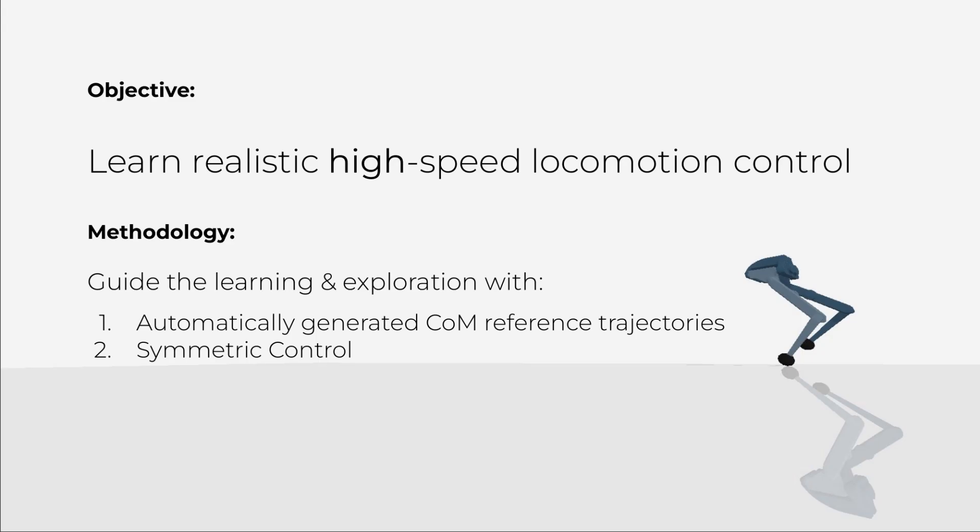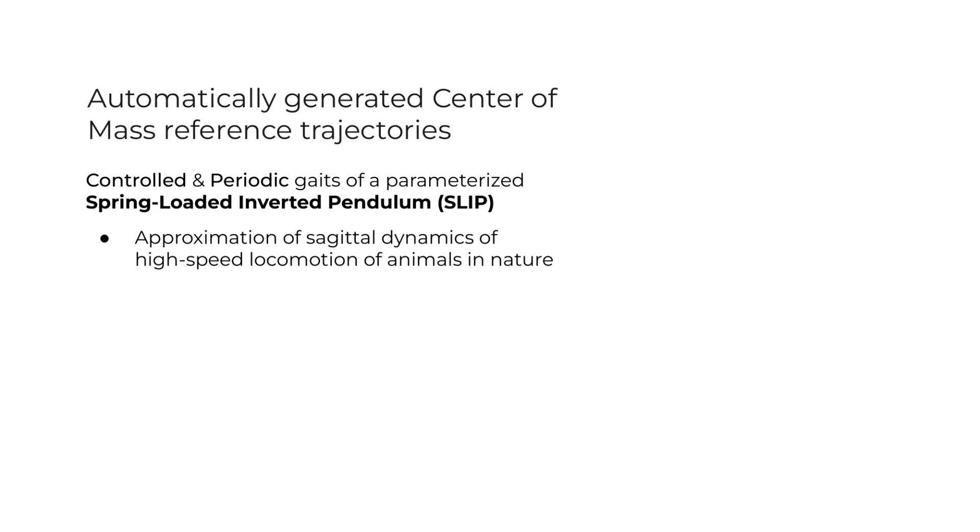So in this work, we want to tackle the problem of learning realistic high-speed locomotion control for any given robotic system. Our proposed methodology is fundamented in guiding the learning and exploration process with, first, automatically generated reference motions, and second, by encouraging the learned controller to be symmetric.